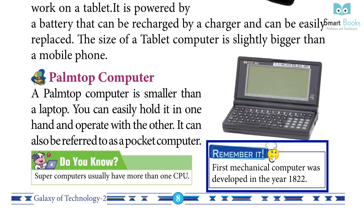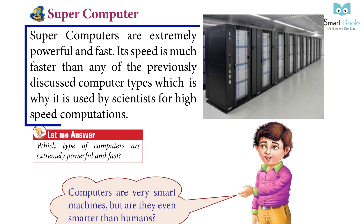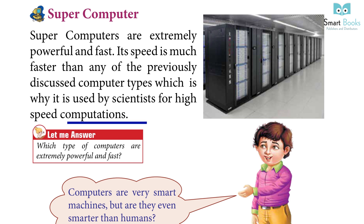Did you know? Supercomputers usually have more than one CPU. Remember: the first mechanical computer was developed in the year 1822. Supercomputers are extremely powerful and fast — their speed is much faster than any of the previously discussed computer types, which is why they are used by scientists for high-speed computations.